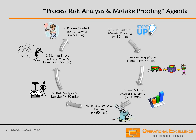Now all the preparation work is done. We have identified our top 10 to 15 X's from our process that have the biggest risk for our process not to deliver desirable results. Now we're going to take those X's one by one and work them through the process FMEA. So let's look at how that will work.